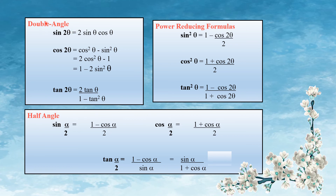Double angle equations: sin 2theta equals 2 sin theta cos theta. cos 2theta equals 1 minus 2 sin squared theta, or cos squared theta minus sin squared theta, or 2 cos squared theta minus 1. tan 2theta equals 2 tan theta divided by (1 minus tan squared theta).